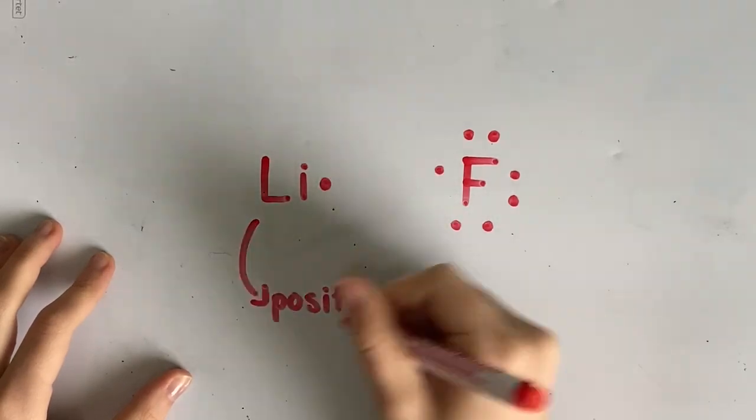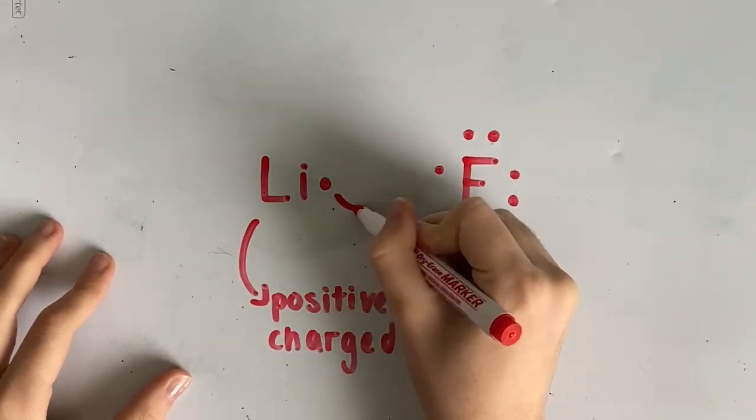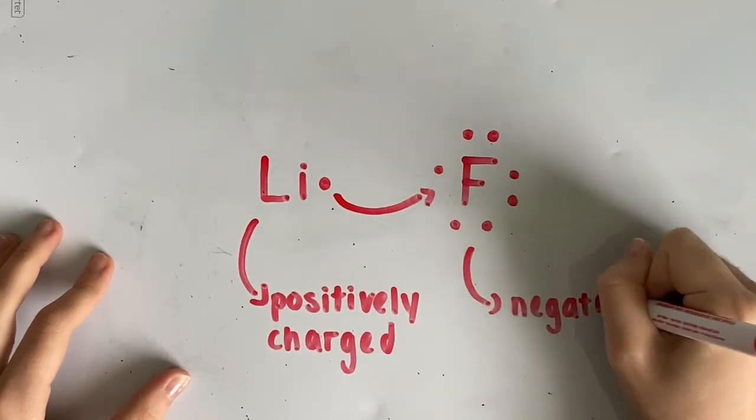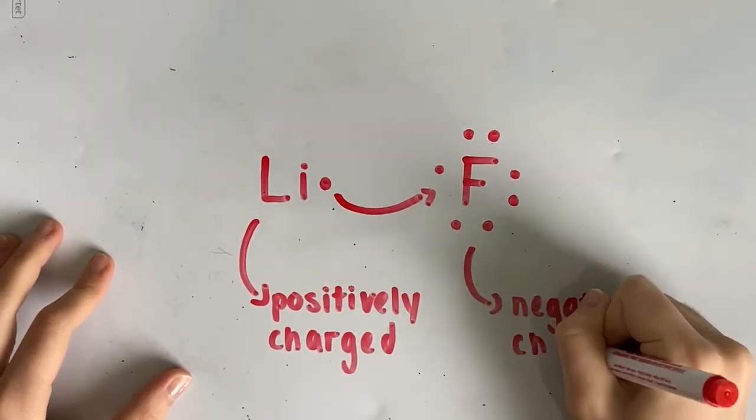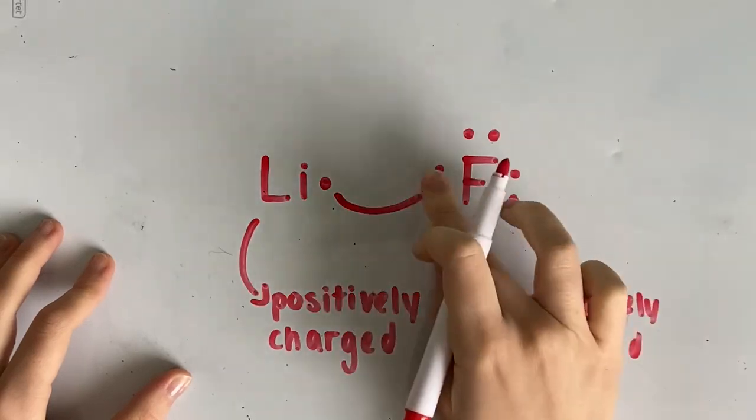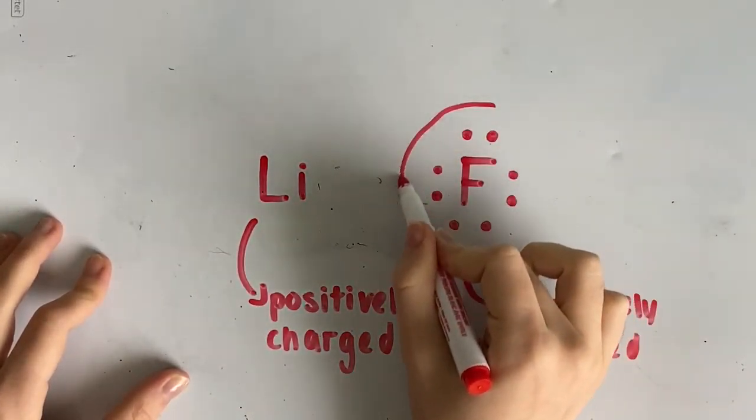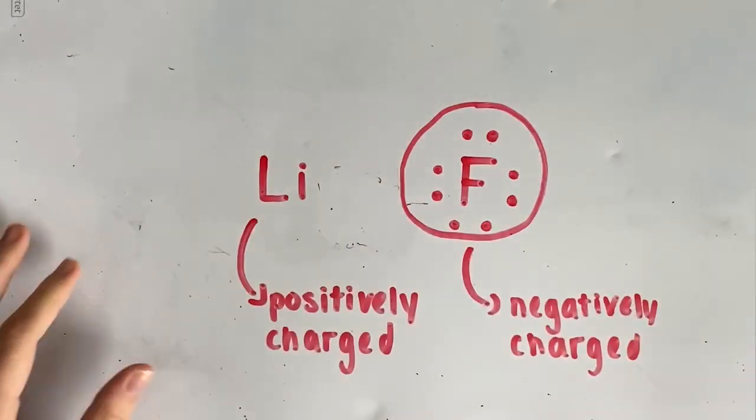A cation is a positively charged ion. It will lose electrons by transferring them to the anion to complete the other atom's valence shell. An anion is a negatively charged ion. It will gain electrons to complete its own valence shell. Most atoms need eight electrons for a complete valence shell.